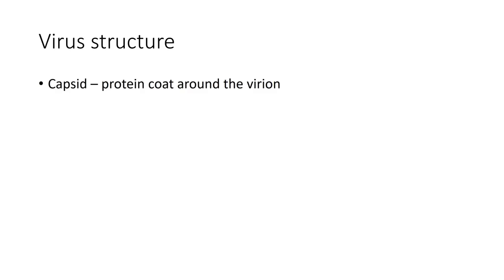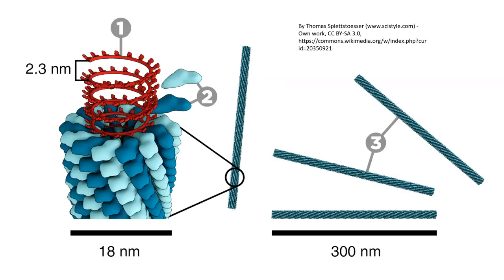Viruses have what we call a capsid, which is a protein coat. It goes around the virus. The virus, when it's outside of the body or outside of the host, we call it a virion. It's a protein coat around the outside of the virion.